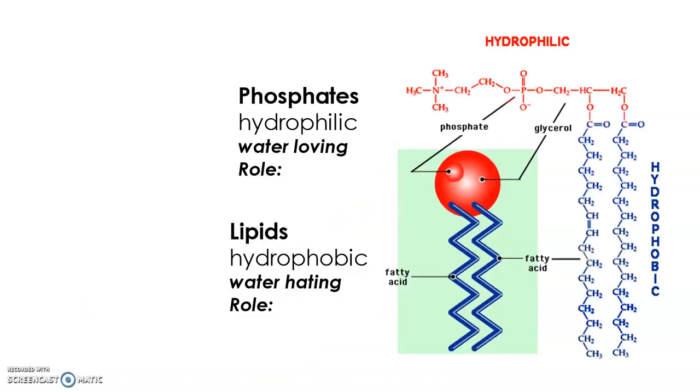So looking at it from a large scale, you can see the top part is our phosphates. And you can see as far as we're concerned, the phosphates contain a phosphorus atom with the oxygens around, and that part is water loving. Okay, and the role is, again, to allow the membrane to blend with the insides of the cell and the outsides.